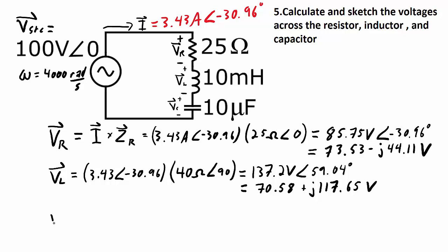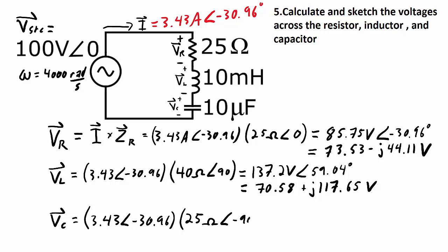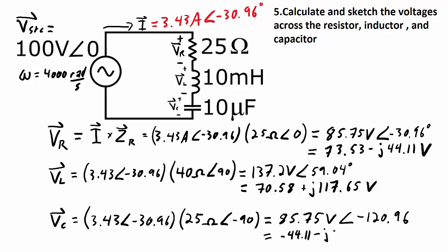The voltage across the capacitor is the current times the capacitor impedance of 25 ohms at minus 90 degrees. The magnitude is 3.43 times 25, giving 85.75 volts, and the phase angle is minus 30.96 plus negative 90, giving minus 120.96 degrees. Converting to rectangular coordinates gives minus 44.11 minus J73.53 volts.